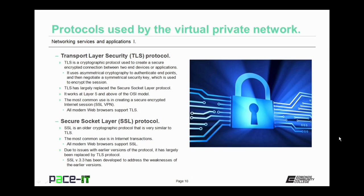Transport layer security is another common VPN protocol. TLS is a cryptographic protocol used to create a secure encrypted connection between two end devices or applications. It uses asymmetrical cryptography to authenticate endpoints and then negotiates a symmetrical security key, which is used to encrypt the session. TLS has largely replaced its cousin, secure socket layer protocol. TLS works at layer 5 and above of the OSI model, and its most common usage is in creating a secure encrypted internet session, or SSL VPN. All modern web browsers support TLS.